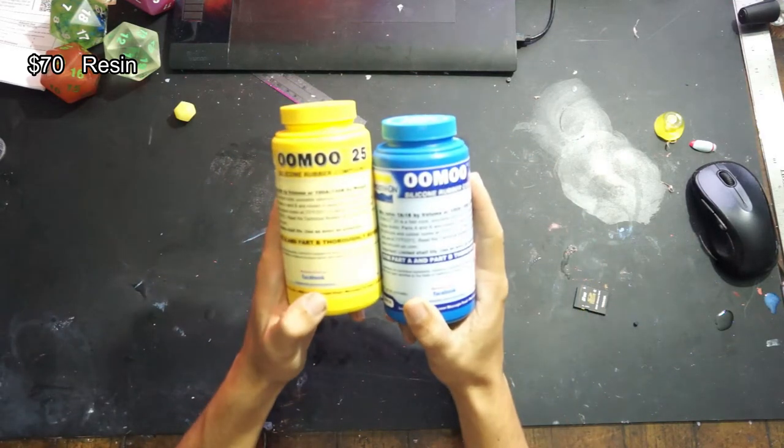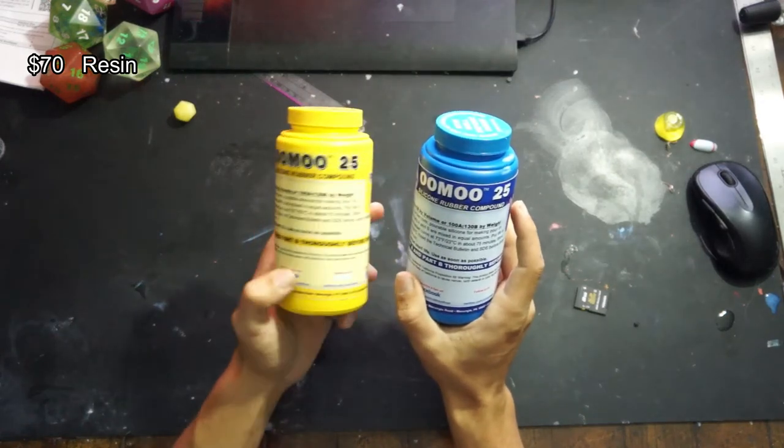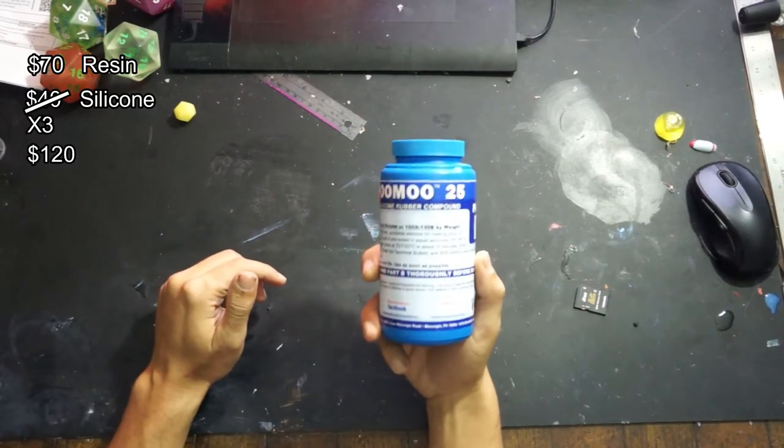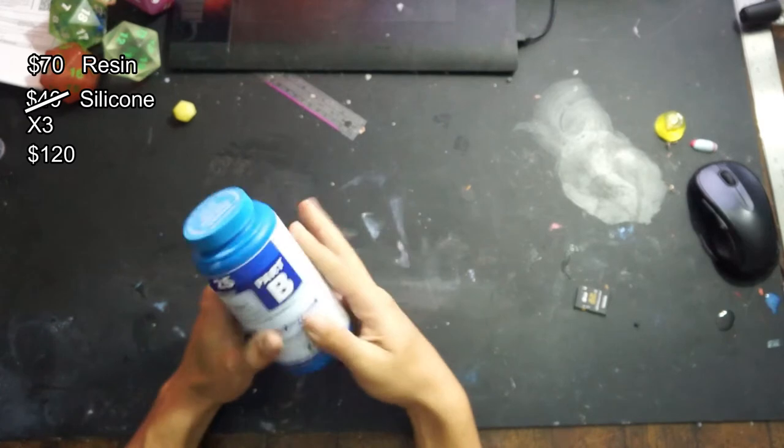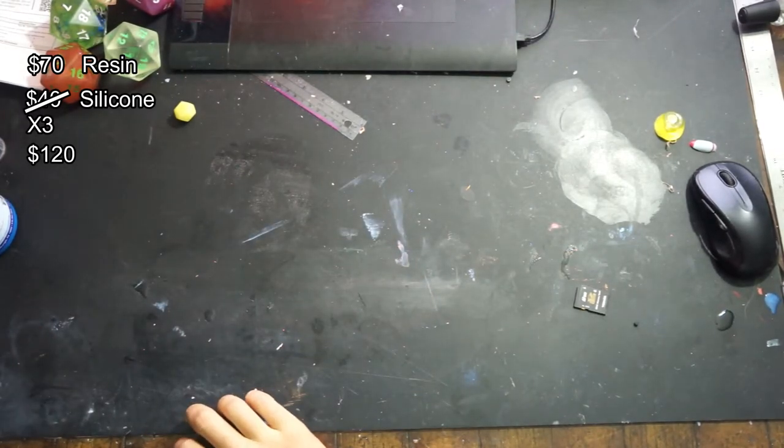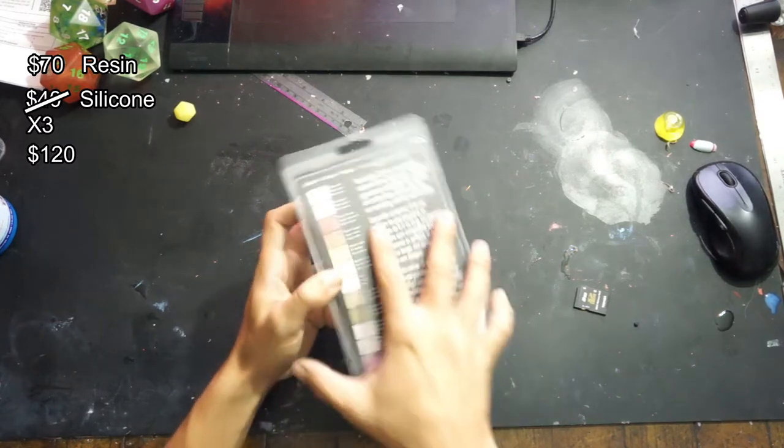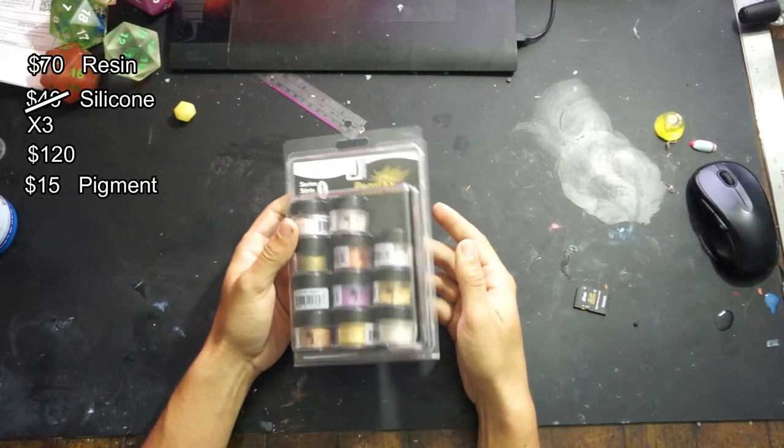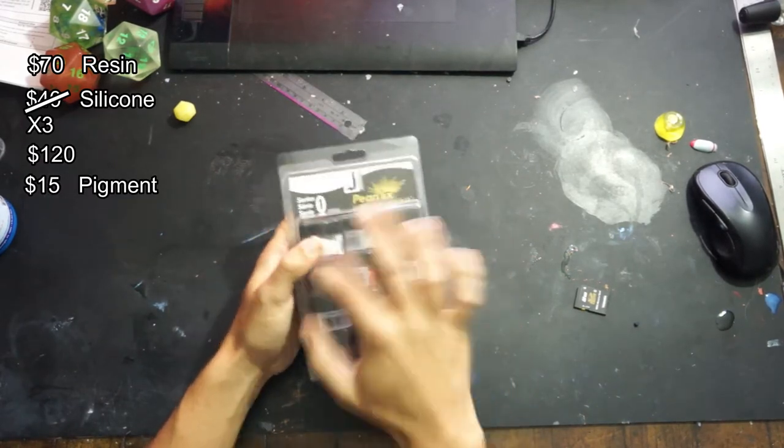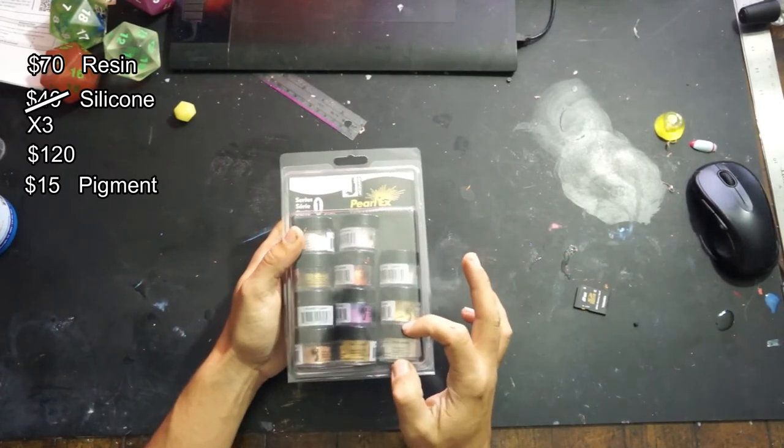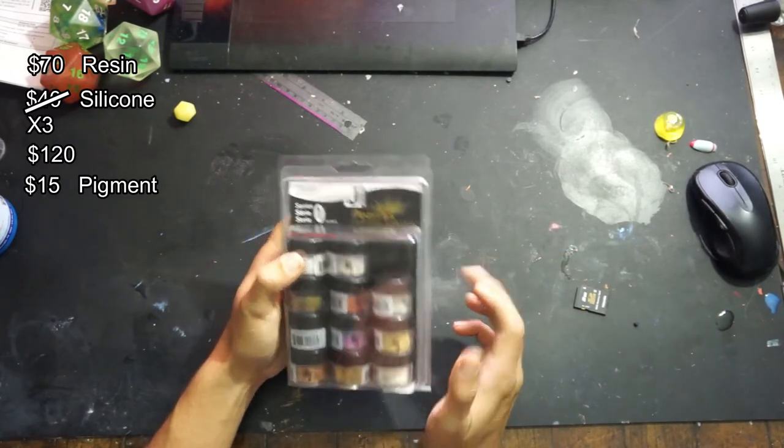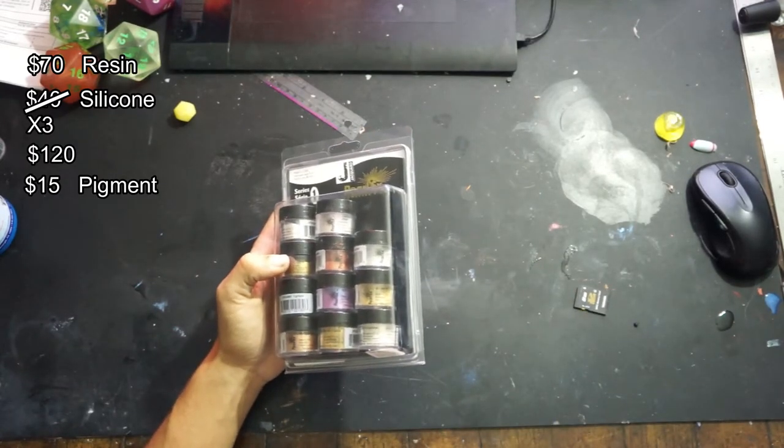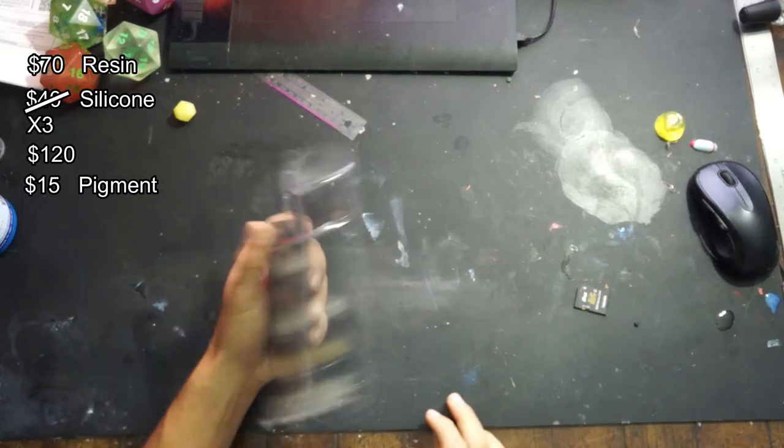Then you're going to need some silicone to make some molds. This is the Smooth-On 25, and that was 40 bucks. I ended up buying three of these, so 120 bucks to do enough molds of all the junk I was working on, because it doesn't go very far. Then you're going to need some pigments. I got this set of Pearl-X, about 15 bucks for this whole set. This will last you a long time. I recommend getting a variety pack like this with a bunch of different colors - really small little containers because these will go a long, long ways. And then you can use alcohol inks.